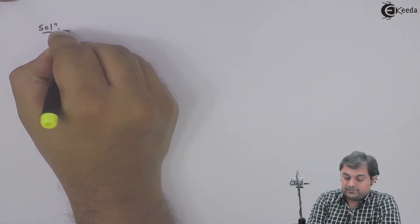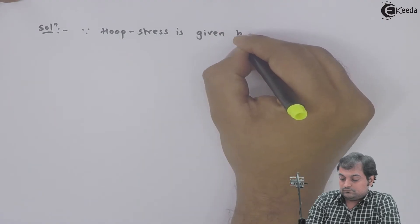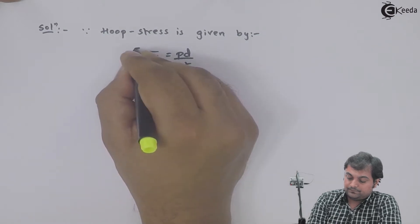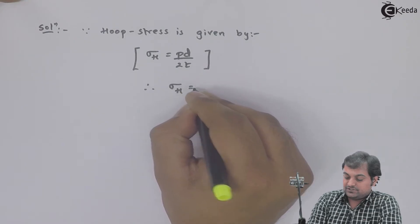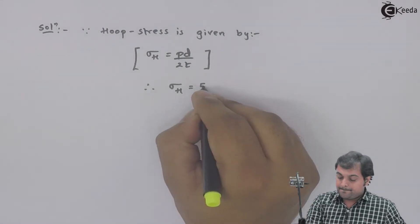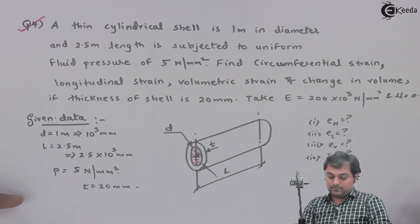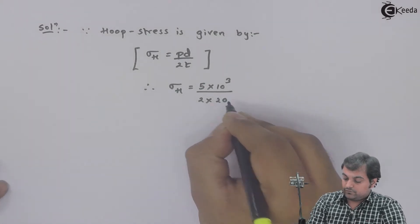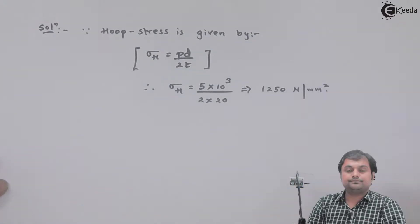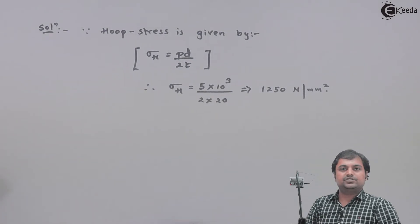In the solution, since hoop stress is given by σH = PD / 2t, therefore σH = (5 × 1000) / (2 × 20), which gives hoop stress as 1250 Newton per mm square. Whenever they tell you to calculate hoop strain or longitudinal strain, first get the value of hoop stress and longitudinal stress.